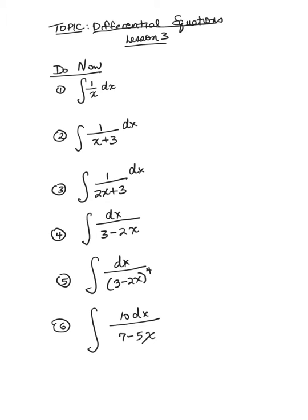Let's do the first three. The answer to the first integral is the natural log of the absolute value of x plus c. Remember that when the denominator has an exponent of 1 and the numerator is just by itself, the integral is the natural log of that expression — the absolute value of that expression.